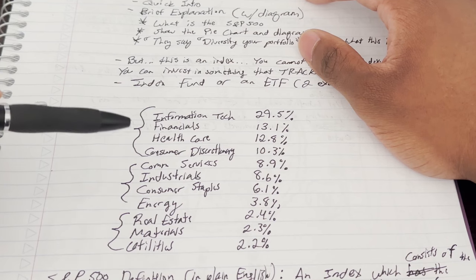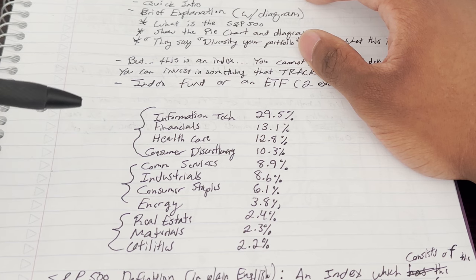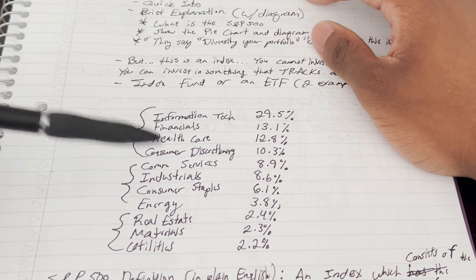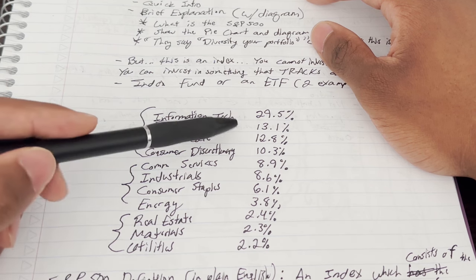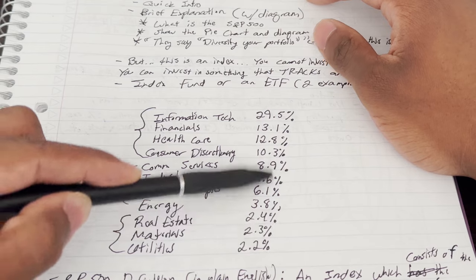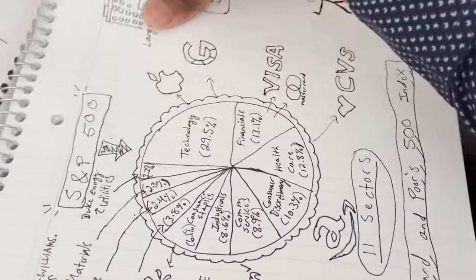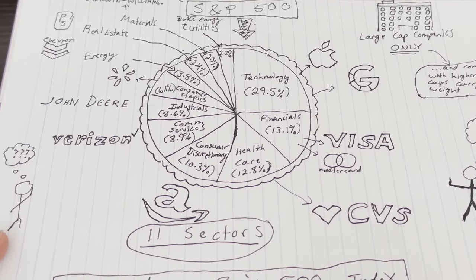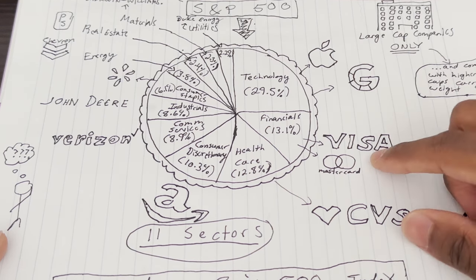If you're just getting started with investing, you've probably already heard the phrase a billion times to diversify your investments — that is what the S&P 500 is. It is an extremely diversified investment. As you can see right here, I have the 11 sectors of the stock market and this is how they're calculated and allocated into the S&P 500. In this drawing, think of the S&P 500 as a pie — I even drew crust around there for you.